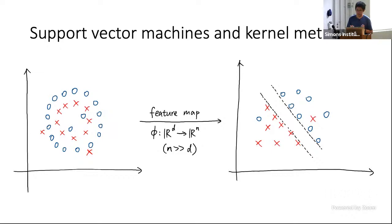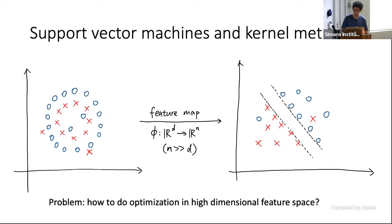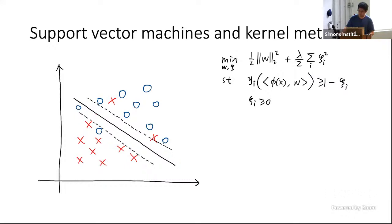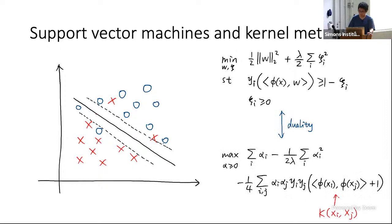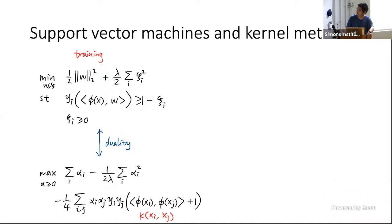However, because the dimension of this feature space could be very high, the convex optimization could potentially become inefficient due to the dimensionality. The trick here is to use duality. If we look at this convex optimization — where I've already replaced the data vectors x with the feature vectors phi(x), which could live in a very high-dimensional space — and we look at the dual program, notice that the feature vectors phi(x) will only appear in an inner product, which we call the kernel function.